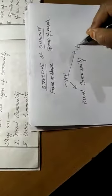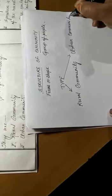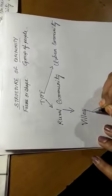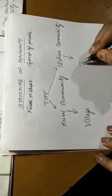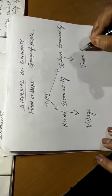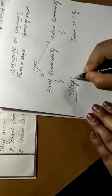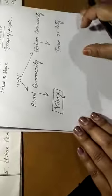The next point is types of community. Types of community are mainly divided into two parts: first one is rural community, and the next type is urban community. Rural community means basically a village, and urban community means a town or city. Next we will discuss about village and urban community.